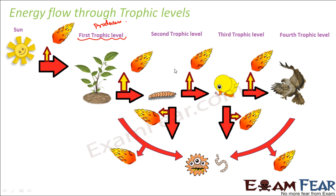From the first trophic level, energy passes on to the second trophic level — that is, the herbivores. These are organisms which directly feed on plants, such as small insects. When energy transfer takes place, a good amount of energy is lost as heat. So only 10% of energy is passed on to this level.